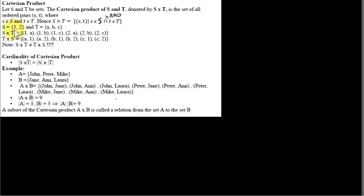Here's an example. S is the set consisting of the two elements {1, 2}. T is a set consisting of the three elements {A, B, C}. S cross T is got by pairing each element in S with each element in T. So we take 1 and pair it with each element in T: (1,A), (1,B), (1,C). Then we take 2 and pair it with all the elements in T: (2,A), (2,B), (2,C). We have six elements in total — the elements of S×T are pairs, so (1,A) is thought of as a single element.